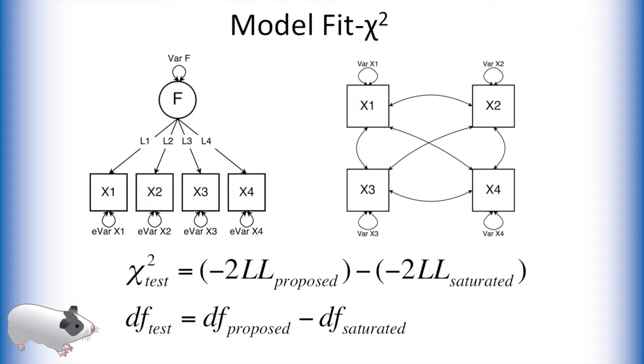If these models indeed have the same likelihoods, then the chi-square value would be zero. The less a factor model is like the saturated model, the higher the chi-square value. Thus, a significant chi-squared value would indicate a poor fit for our model.